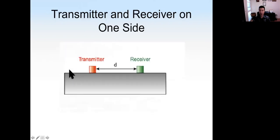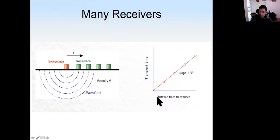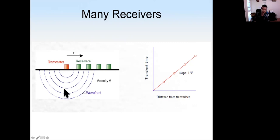The transmitter and receiver can also be on one side. The transmitter sends a wave, and the wave will be reflected back to the receiver at the interface between the specimen and the air. We could also have one transmitter and many receivers. If we set up the machine like this, we can plot distance from the transmitter versus transmission time, and based on that we can calculate the velocity of the wave inside the materials, which also gives us information about the condition of the materials.